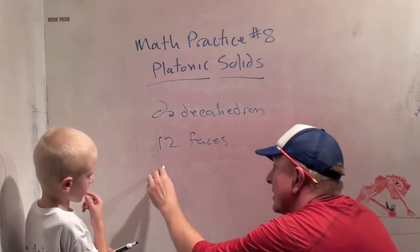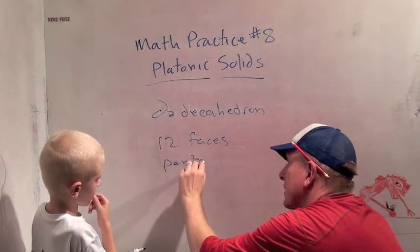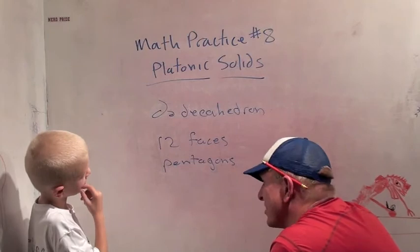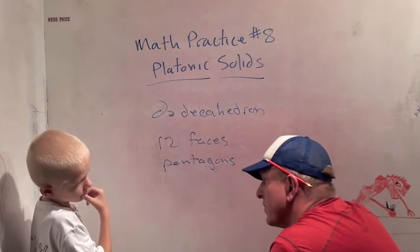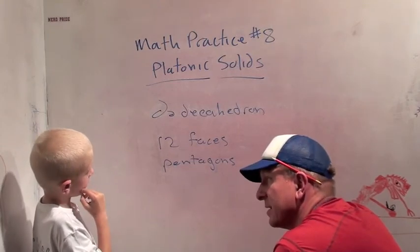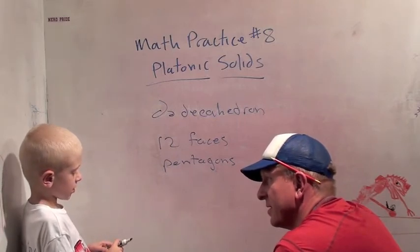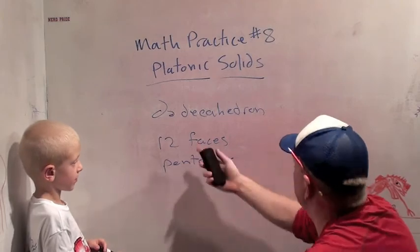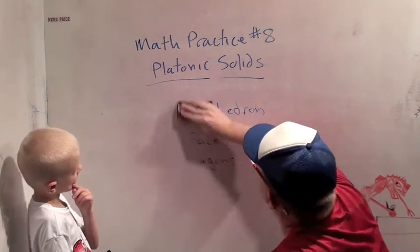And you know what they are? What? Pentagons. So it kind of looks like a soccer ball. Do you know what a pentagon is? Yeah. How many sides does the pentagon have? Five. Five. So a dodecahedron kind of looks like a soccer ball.